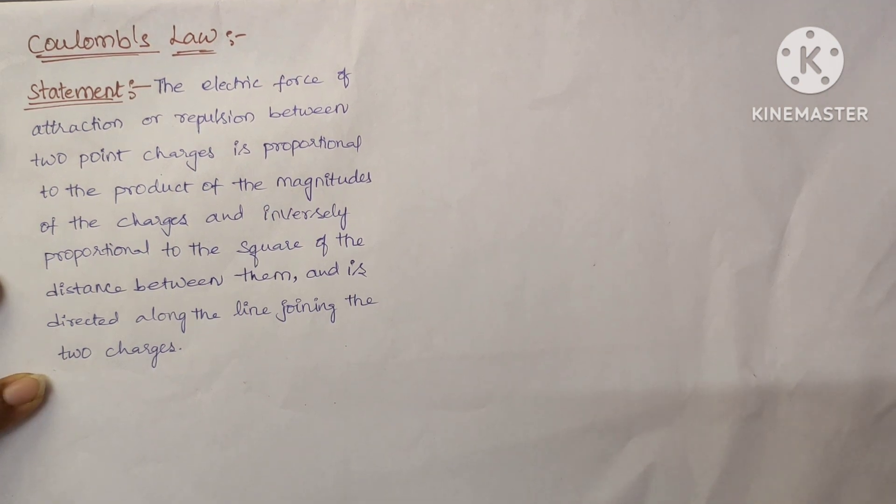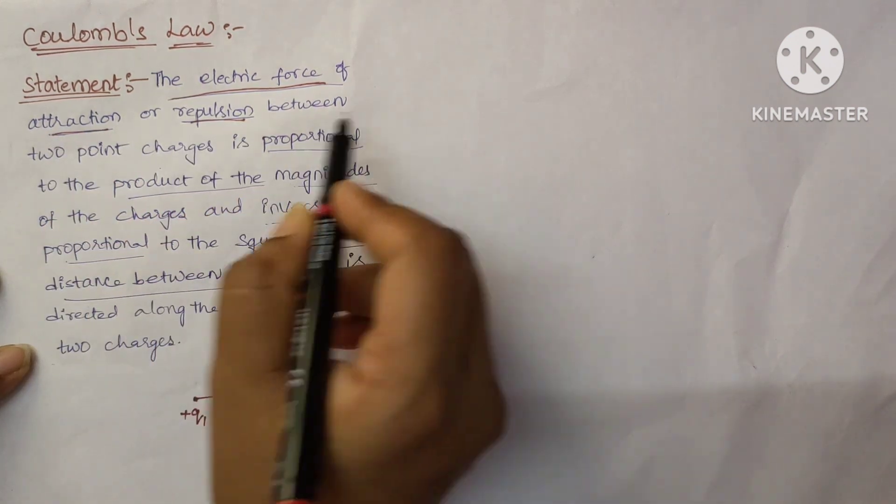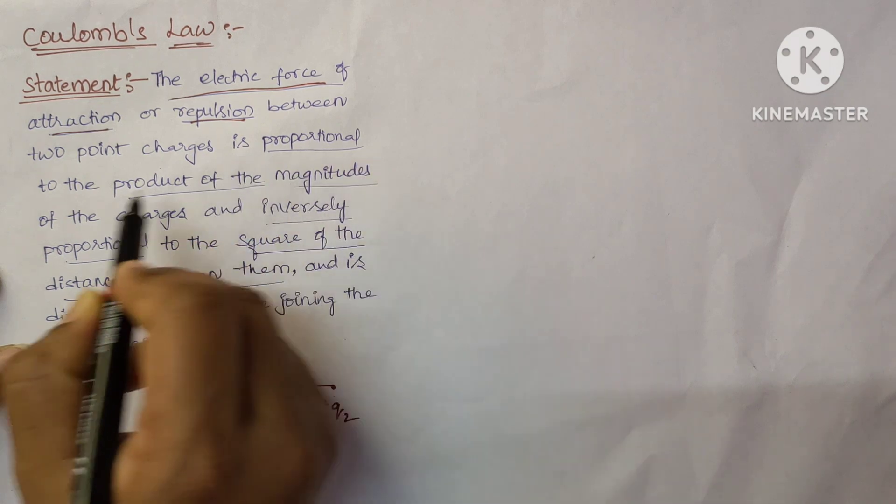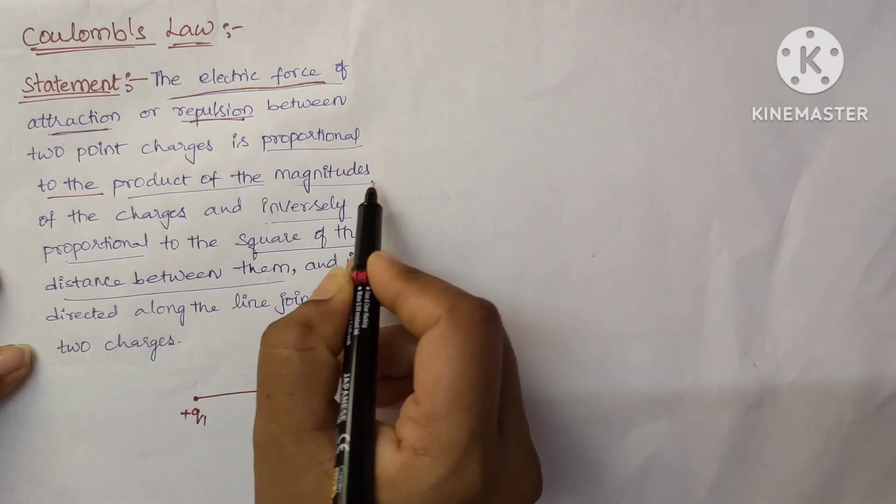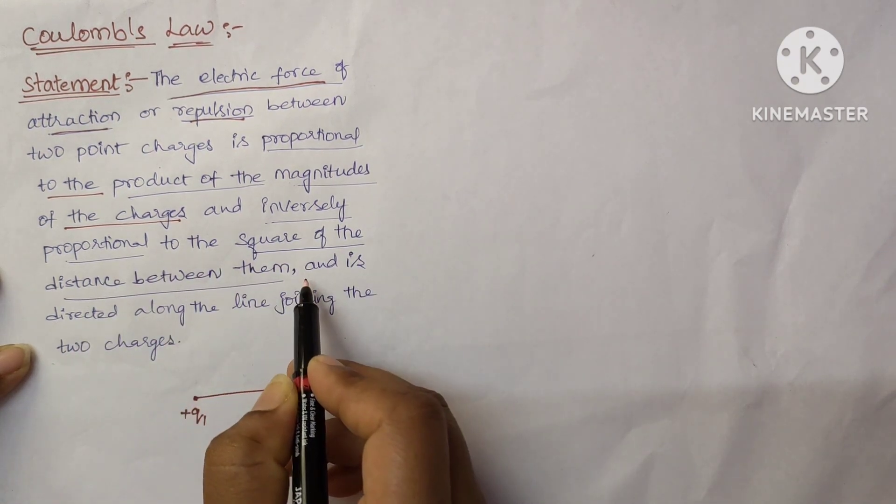Let's see the statement. The electric force of attraction or repulsion between two point charges is proportional to the product of the magnitudes of the charges and inversely proportional to the square of the distance between them.